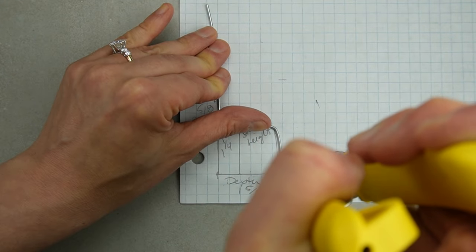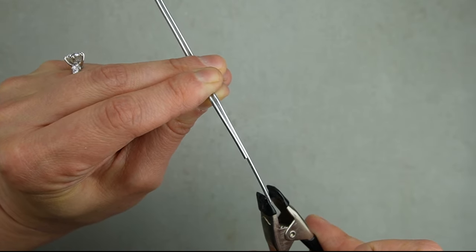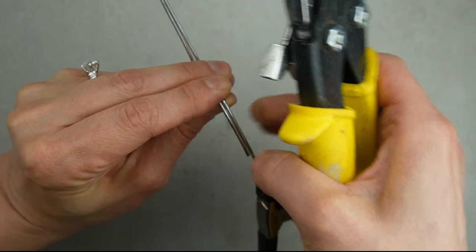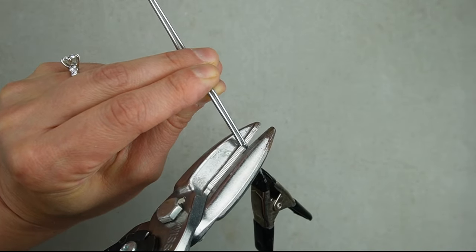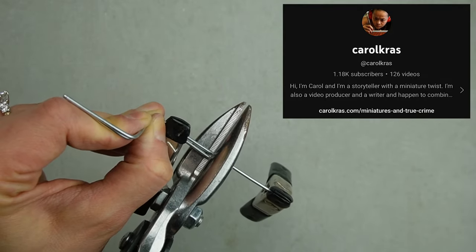I'm trimming the front leg against my template. I'm trimming the second leg to match and using this little clip to hold the piece of wire so it doesn't fly across the room. I came up with this idea after seeing Carol use magnets for a similar purpose.